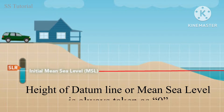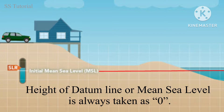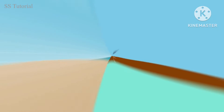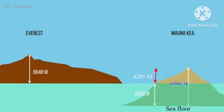That means the datum line or mean sea level is taken as the base for measuring the elevation of any place on the earth's surface, and its height is always taken as zero. Now look at this diagram — the arrow shows the datum line or mean sea level, from which elevation is measured.